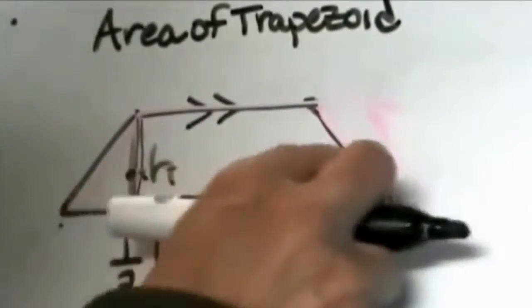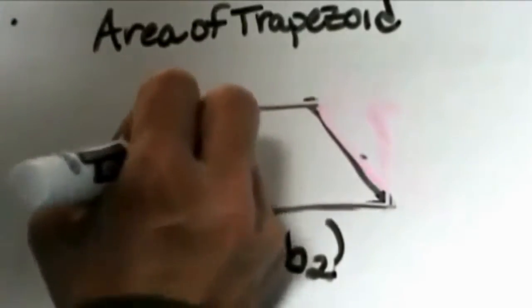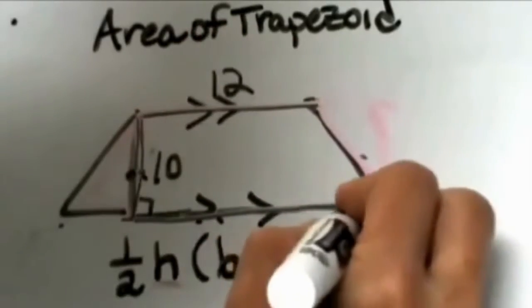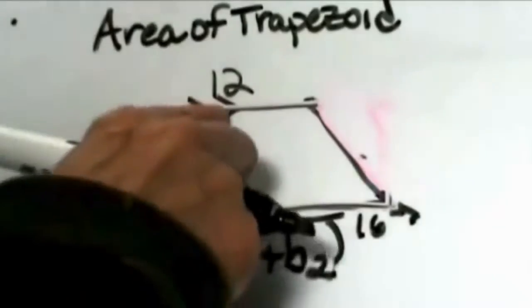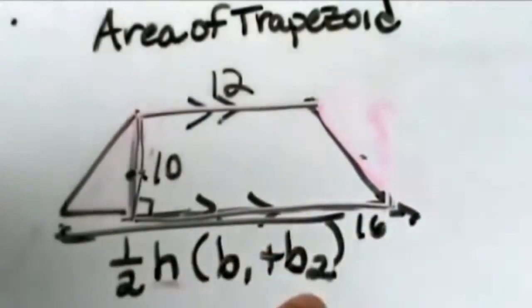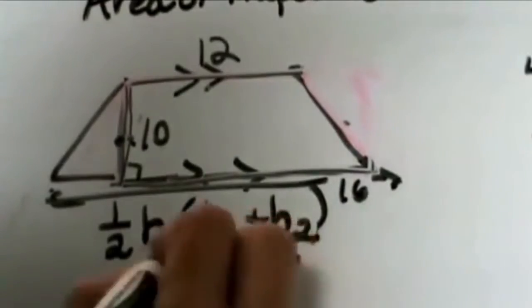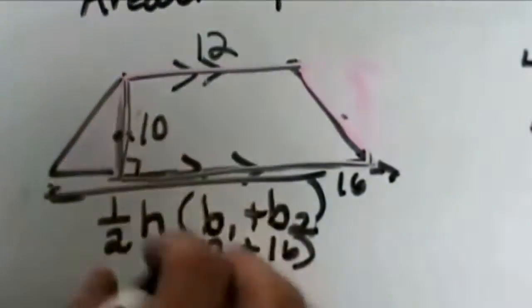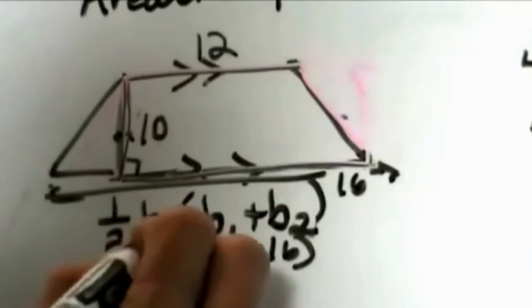Let's say that our height is 10 and our two bases are 12 and 16. So this original base is 16. We're going to plug in 12 and 16 for b1 and b2. We're going to add those two together and multiply it times the height, which is 10, and then take half of that product.